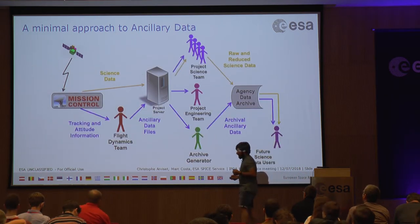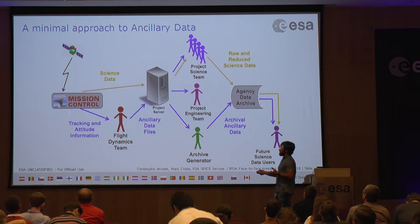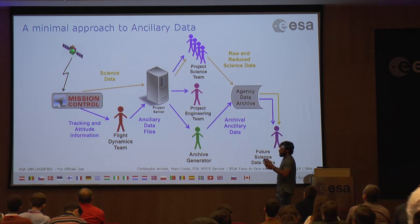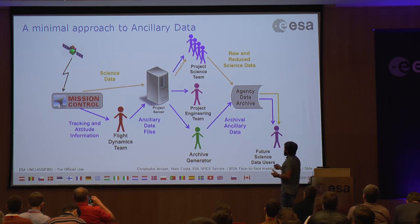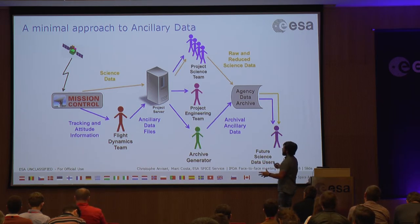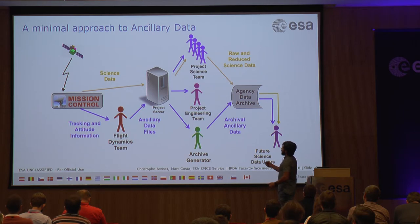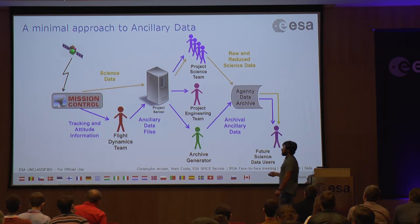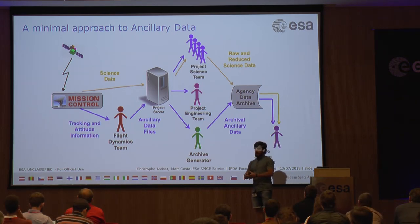With this minimal approach, the problem is that you have different actors generating different types of ancillary data. On one side you have your flight dynamics team receiving raw information and generating ancillary data. Then you have someone in the ground segment processing that ancillary data to provide to a science team or other clients, another place where you archive this data, and users who may handle it in yet another way. The ancillary data itself is basically not controlled. On top of that, you can replicate this problem multiple times because users may use data from different missions, where formats and conventions will also change.